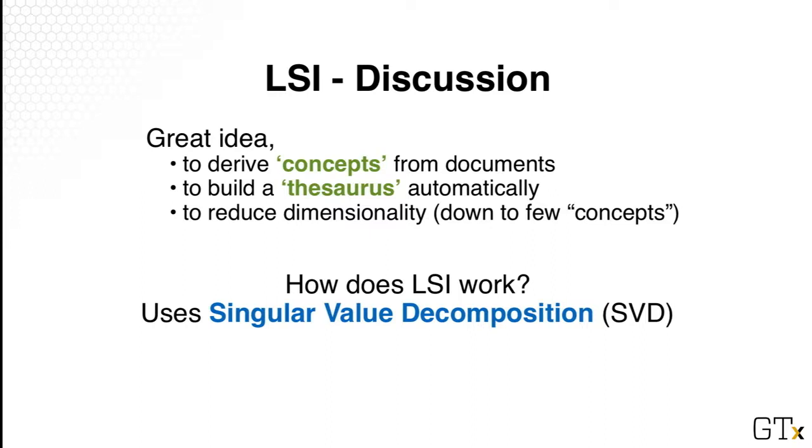So a short recap is that LSI is a great idea because it can help us derive these concepts among documents. And what we saw also is the application of LSI, which is that it essentially builds some sort of thesaurus automatically. And also by using it, we can do retrieval that goes beyond exact match. And also later on, we will learn that through LSI, we can actually get a ranking of the discovered concepts, which would allow us to throw away the less important concepts, doing essentially what we call dimensionality reduction.